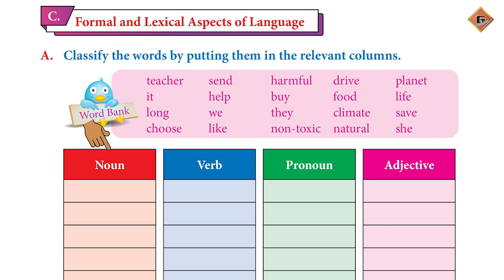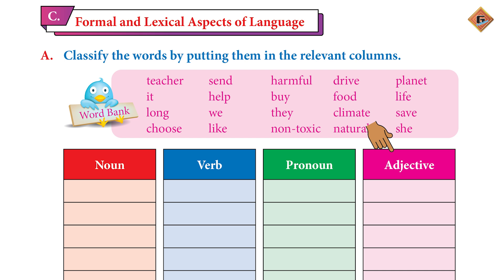What is a noun? Excellent — naming words. What is a verb? Well done — action words. Pronouns are words which are used in place of nouns. Adjectives are words which are used to describe nouns.